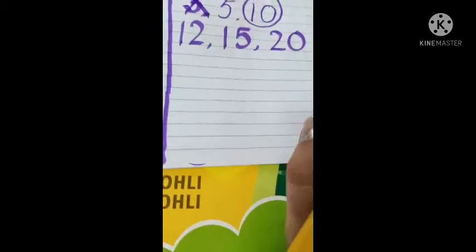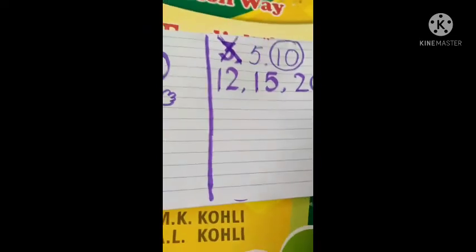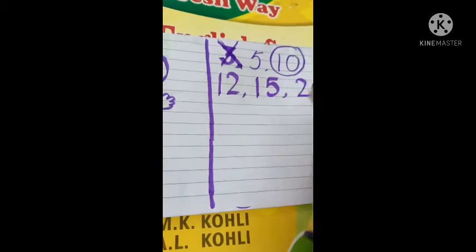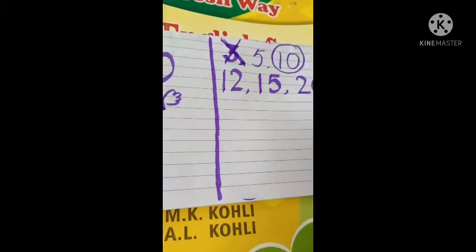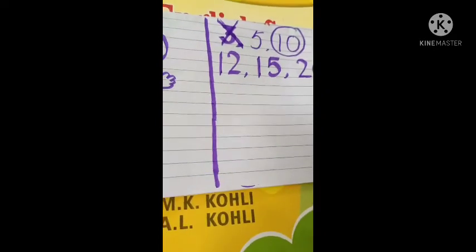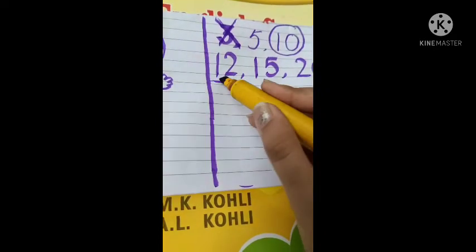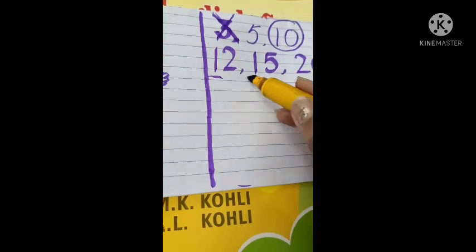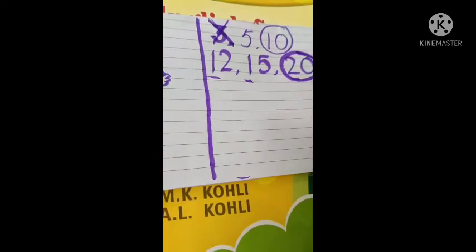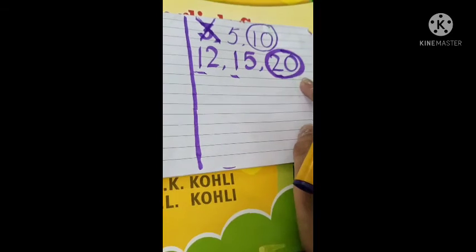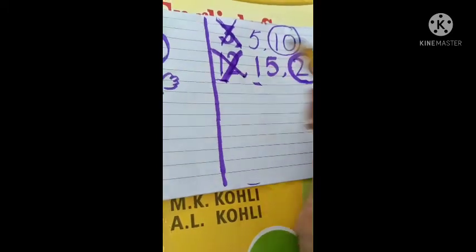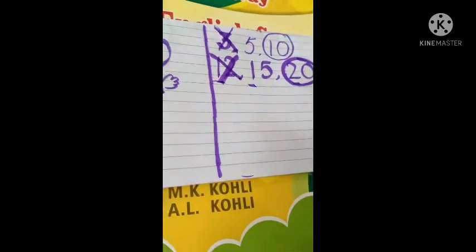Sabse peahle toh hum tens vali digit dhekhenge, ki first number — tieno ke first number dhekhenge koon sa big hai. Agar first number small hua toh second number dhekhenge. Ab first number dhekhthe hai: yaha bhi one, yaha bhi one, or yaha two. It means this is the big number — two, zero, twenty bada hai na. Or sabse chota koon sa hai? One, two, twelve. Toh smallest number ko cross karenge.